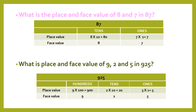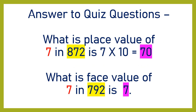I hope you liked the video. Now coming to the answers to the quiz questions. First question was: what is the place value of 7 in 872? Since 7 is present at the tens position, it is 7 multiplied by 10, which becomes 70. So the place value of 7 in 872 is 70. And for the face value of 7 in 792, face value remains the numerical value, so it is 7.